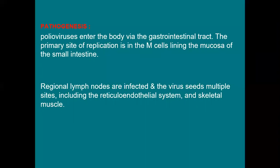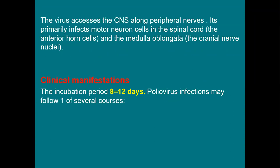After replication, the virus is transmitted by blood and lymph nodes into the regional lymph nodes, then spreads to many sites in the body including the reticuloendothelial system and skeletal muscle. It also gains access to the CNS along the peripheral nerve, primarily infecting the motor neuron cells of the anterior horn of the spinal cord. It can also reach the brain stem and affect the medulla oblongata, which is the lower part of the brain stem.